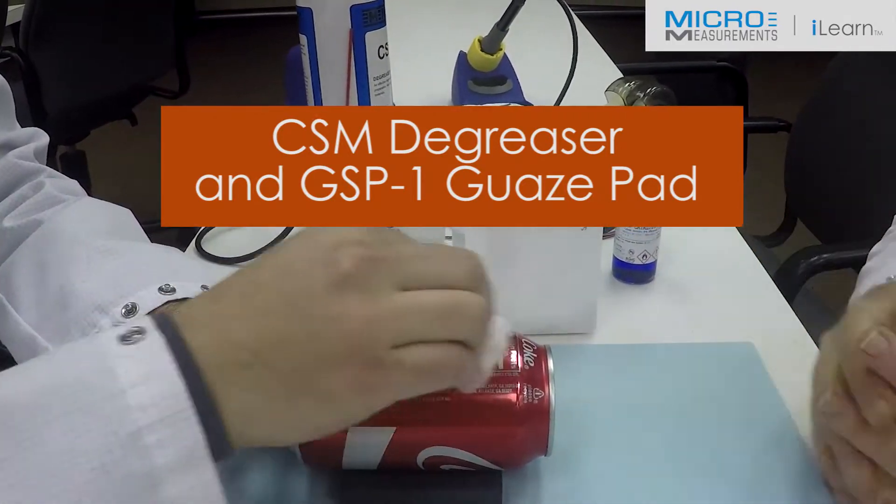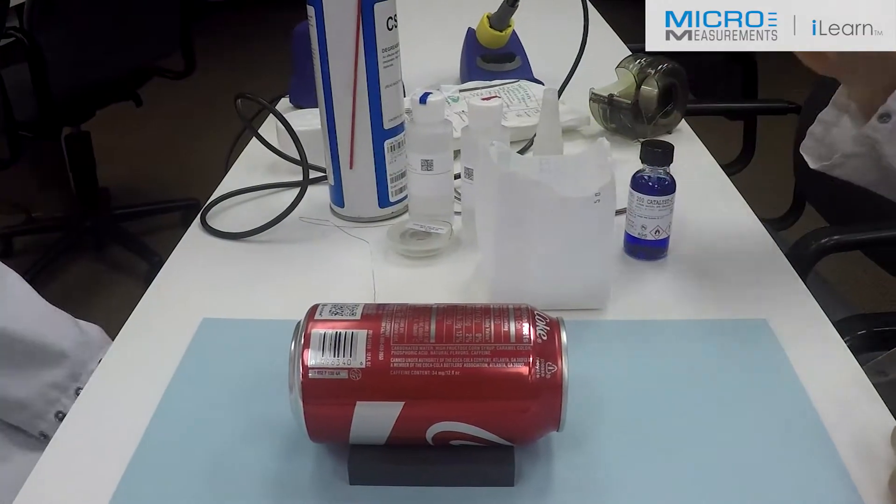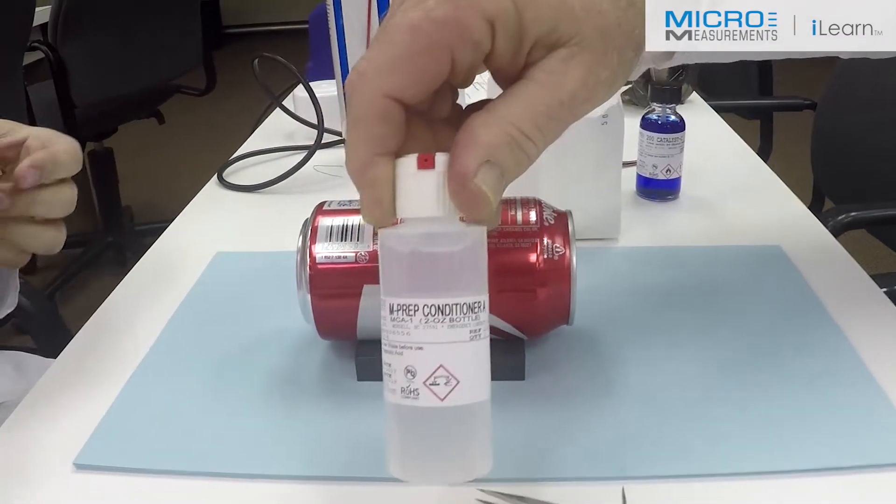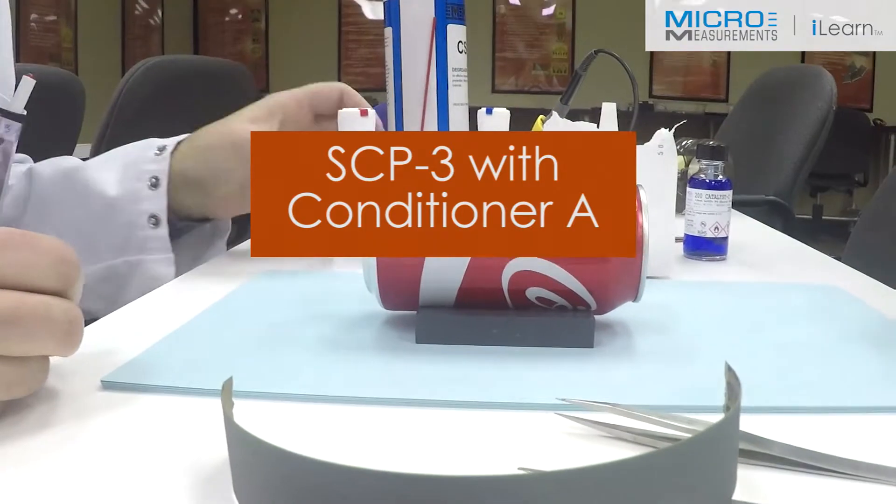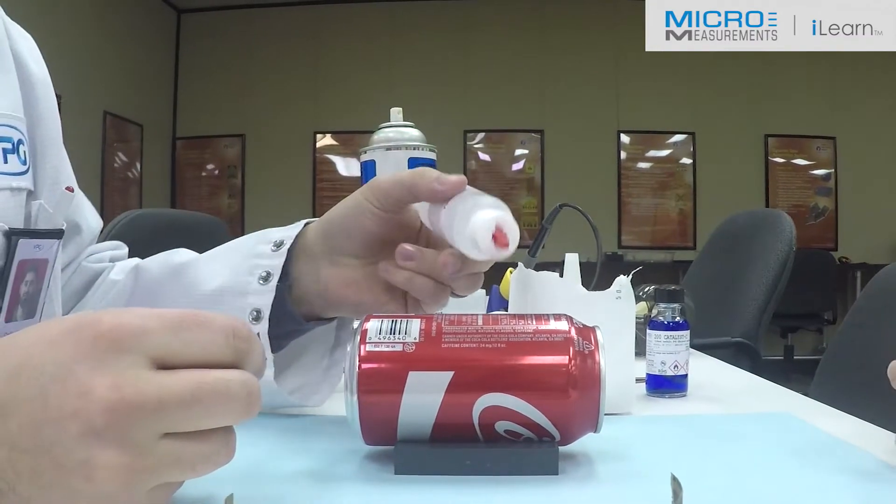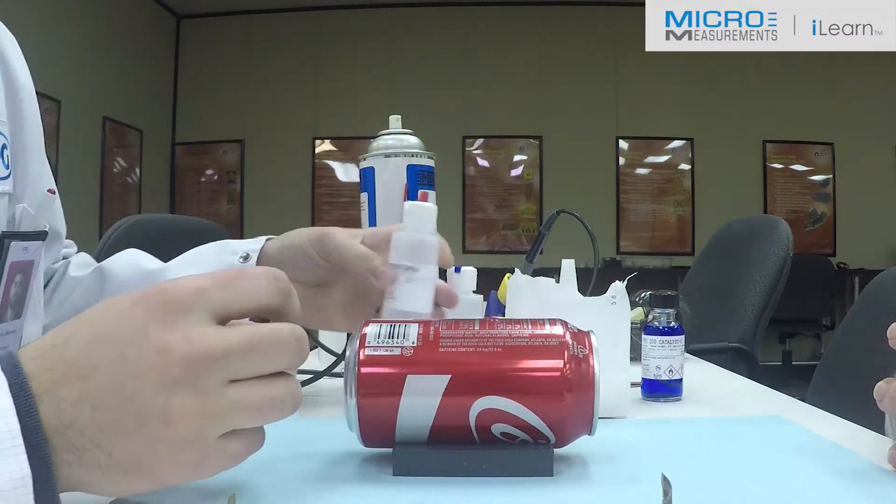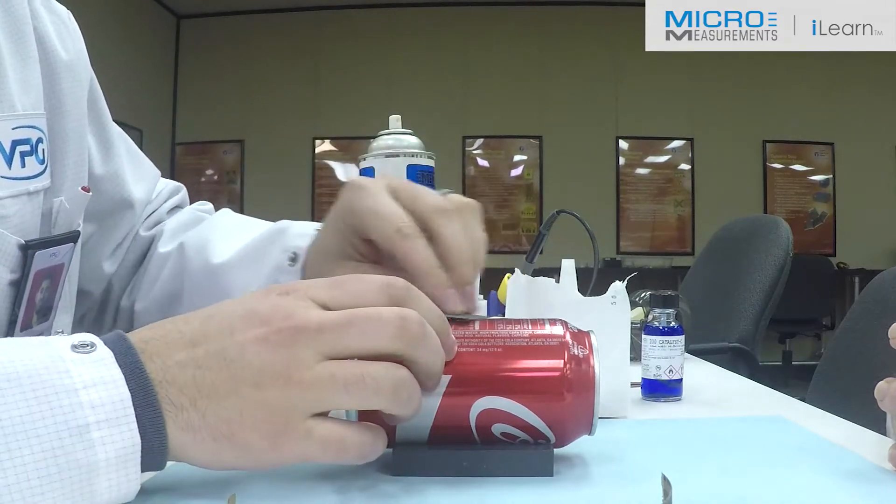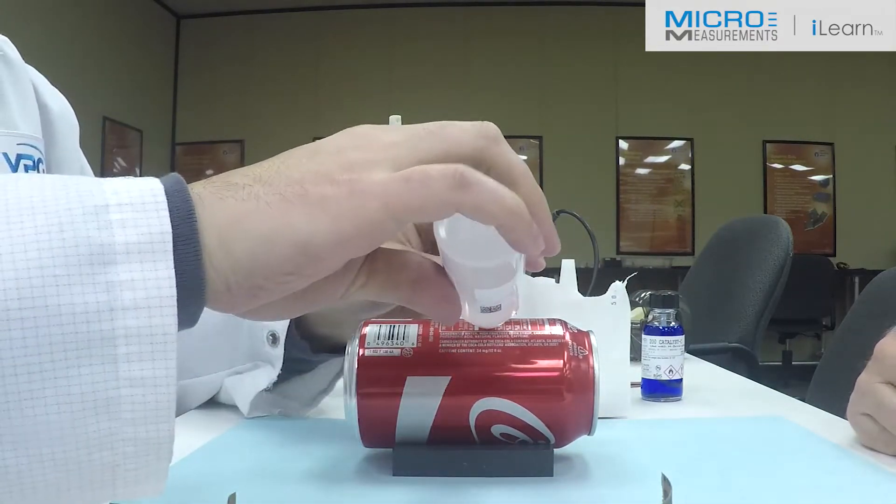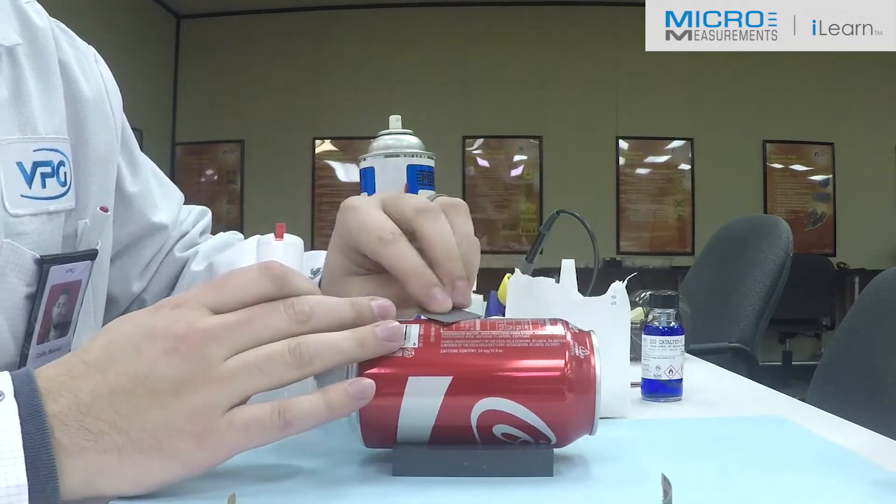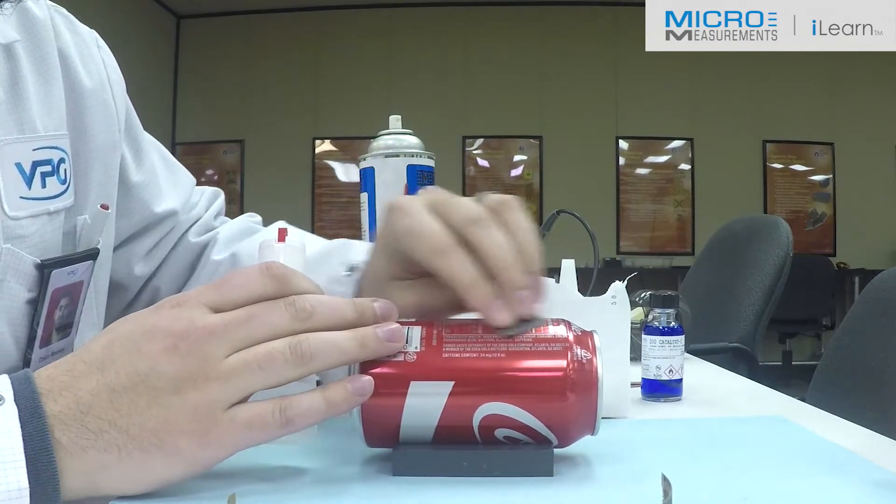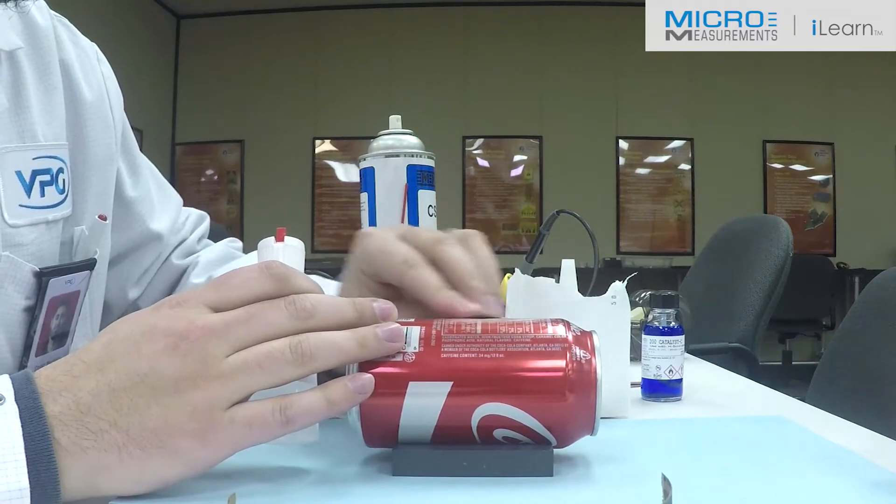Colin likes to get rid of the nutritional information. The next step will be to use the Conditioner A, the mild phosphoric acid solution, and some CSP-1, the 400 grit silicon carbide abrasive paper. Now the Coke can is fairly thin, so you need to be a little bit less aggressive with your surface preparation to avoid cutting a hole through the can. Colin's going to lightly abrade the surface, keeping it good and wet because as that Conditioner A dries, it'll just redeposit the contamination. He's hoping to get through the paint down to the base aluminum.